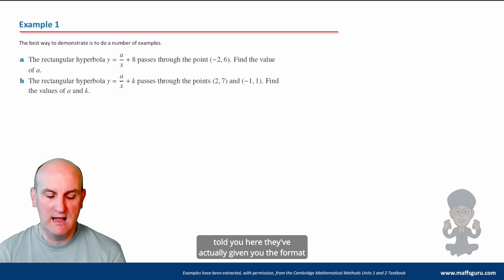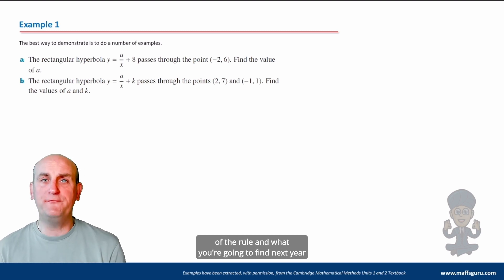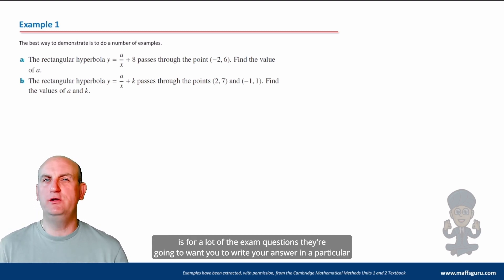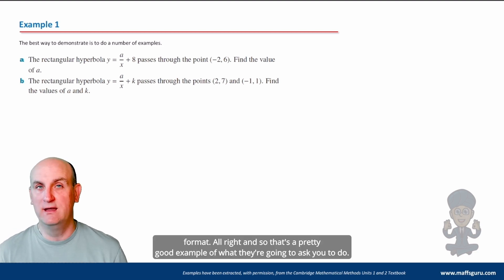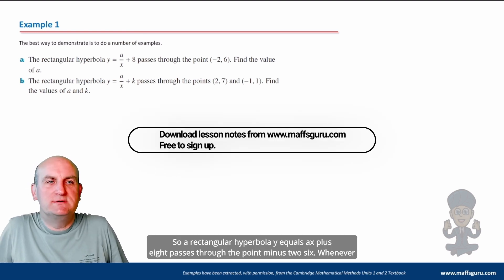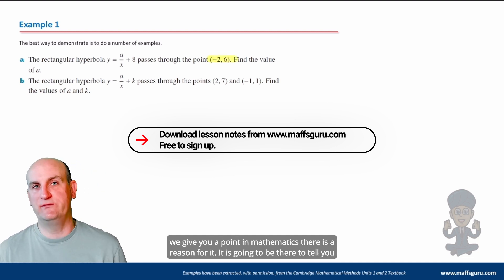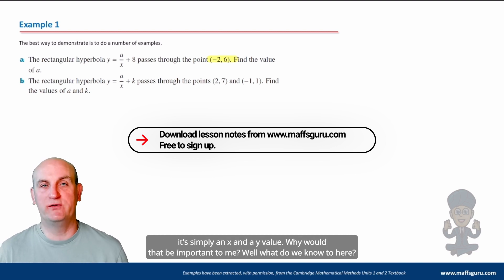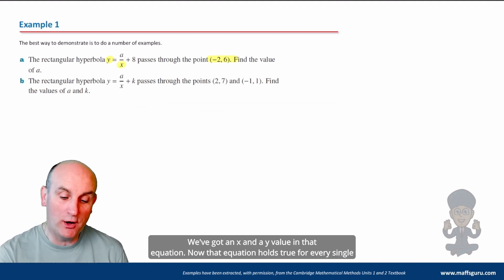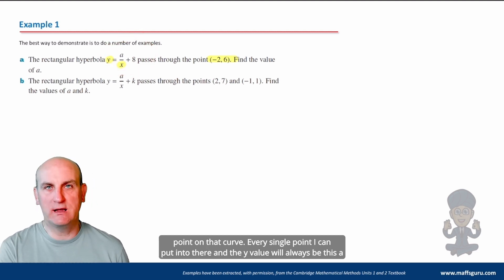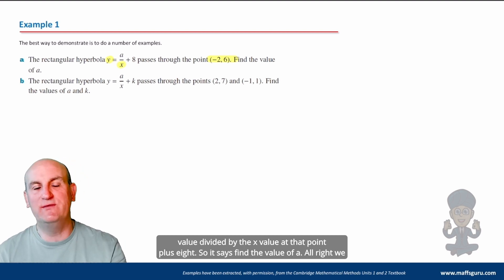So see what I've told you here? They've actually given you the format of the rule. And what you're going to find next year is for a lot of the exam questions, they're going to want you to write your answer in a particular format. So a rectangular hyperbola y equals a/(x+8) passes through the point (-2, 6). Whenever we give you a point in mathematics, there is a reason for it. It is going to be there to tell you it's simply an x and a y value. Why would that be important to me? Well, what do we notice here? We got an x and a y value in that equation. Now that equation holds true for every single point on that curve. Every single point I can put into there and the y value will always be this a value divided by the x value at that point plus 8.